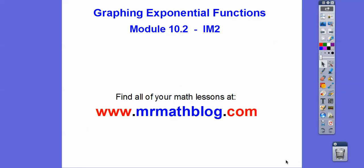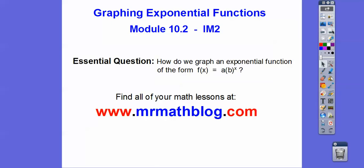Hey folks, this is trial two — I had some people come in and had to stop and start over. Anyway, so graphing exponential functions. This is our IM2 class. We're skipping 10.1 — our school district skipped it, though it's a good lesson on finding inverses. So, how do we graph the exponential function of the form f(x) = a times b to the x? Both a and b will influence our graph, and x is always in the exponent in this lesson.